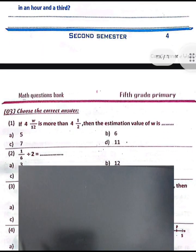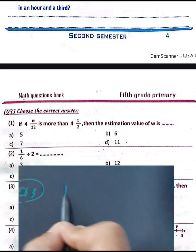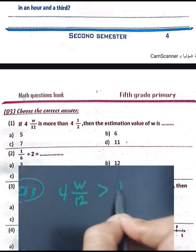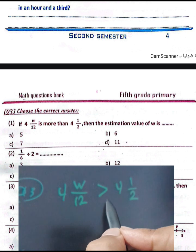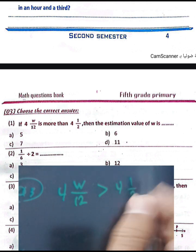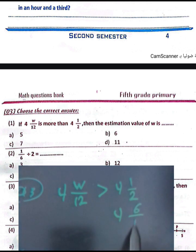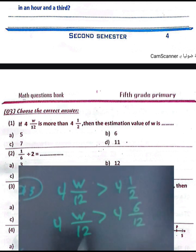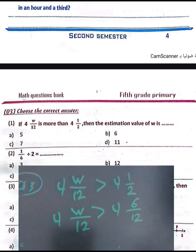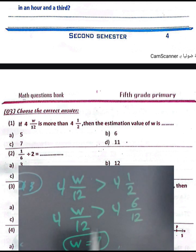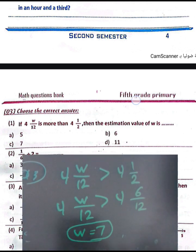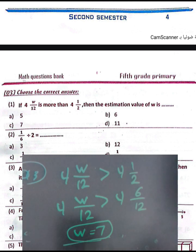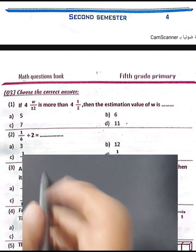Question number three: if four and w over 12 is greater than four and one half, then the estimation value of w equals what. Convert one half to six over twelve. You need a number greater than six, so the nearest whole number greater than six is seven. The estimation value of w equals seven.